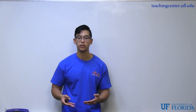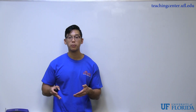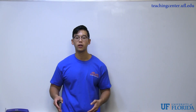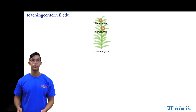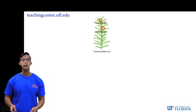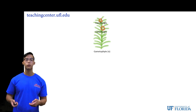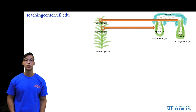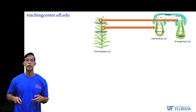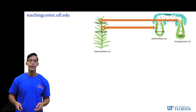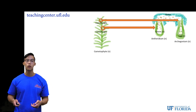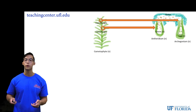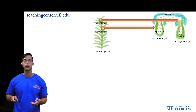Now that we've identified the different components, let's put it all together. Remember that mitosis maintains a cell's ploidy while meiosis cuts a cell's ploidy in half. Starting with the gametophyte, which is haploid, it has gametangia in the form of archegonium or antheridium that produce gametes such as egg or sperm. The gametangia and the gametes they produce are both haploid, so mitosis must have occurred, since mitosis maintains a cell's ploidy.